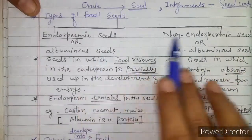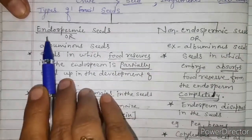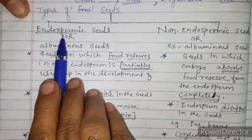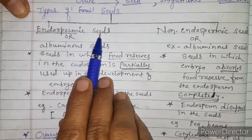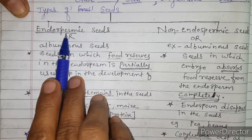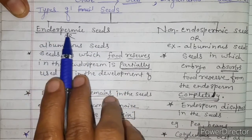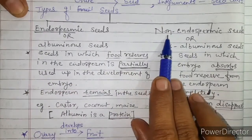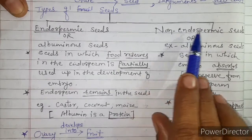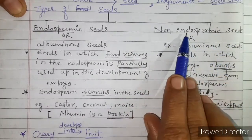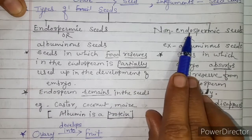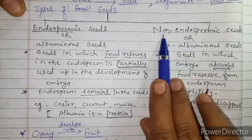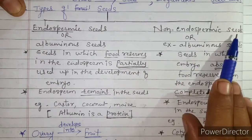We will see the difference between these two. The name indicates endosperm — seeds having endosperm are called endospermic seeds. The word 'non' means absent, so seeds in which endosperm is absent — there is no endosperm — such seeds are called non-endospermic seeds.